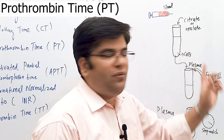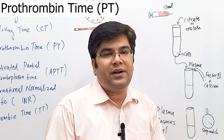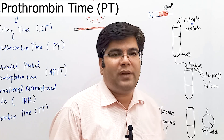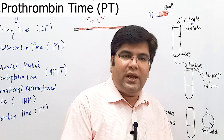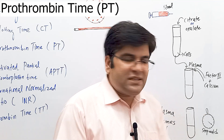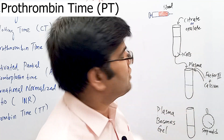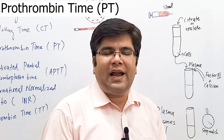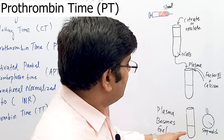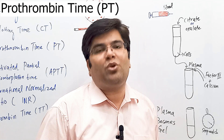This anticoagulated blood is centrifuged to separate cells from plasma, since plasma contains all the clotting factors. Clotting factor number 3, also called tissue factor or tissue thromboplastin, is added into this plasma to activate clotting through the extrinsic pathway. A large excess of calcium is also added to nullify the effect of the anticoagulant citrate or oxalate. The stopwatch is switched on and the total time taken for the plasma to become a gel — that is, to clot — is called the prothrombin time.